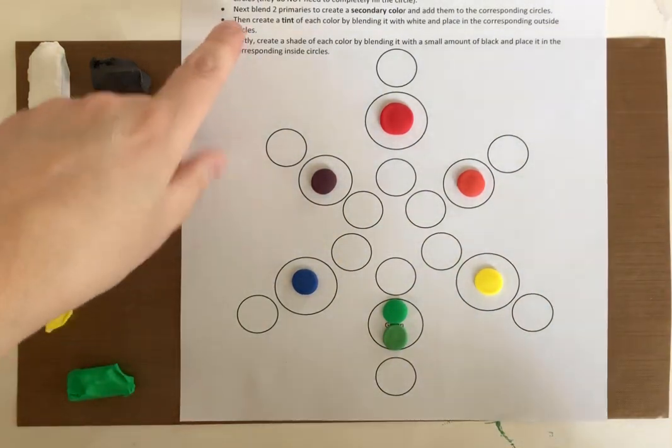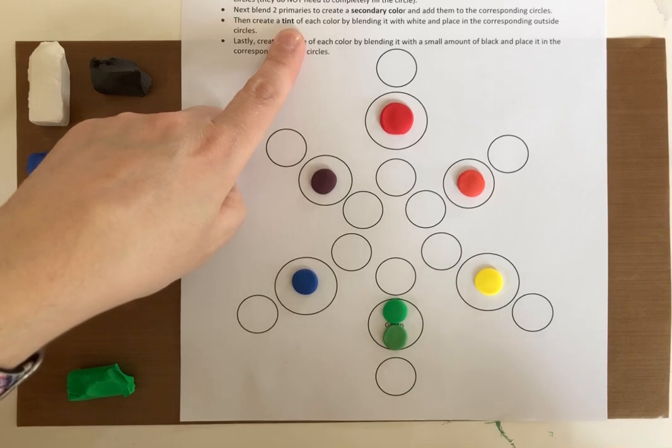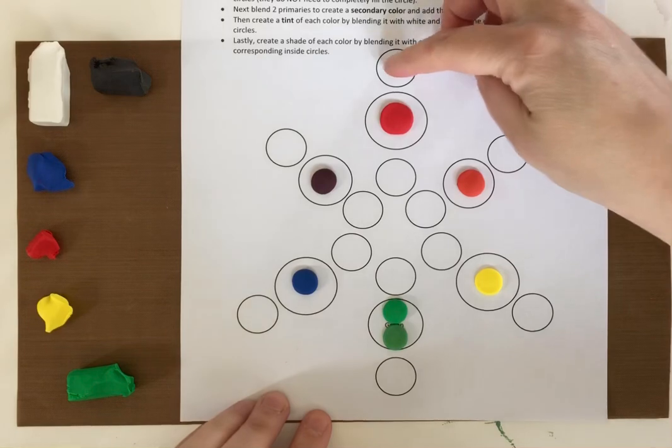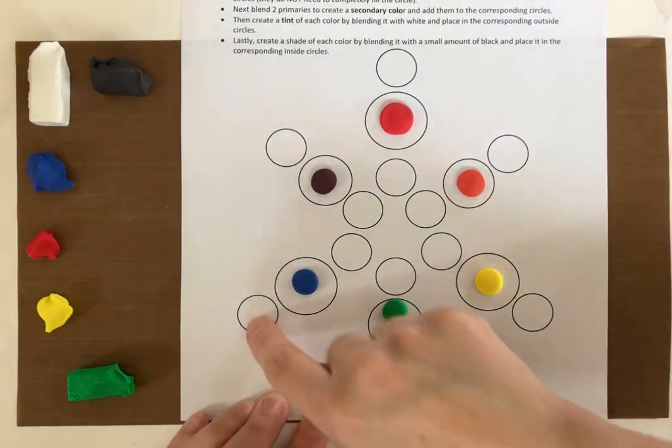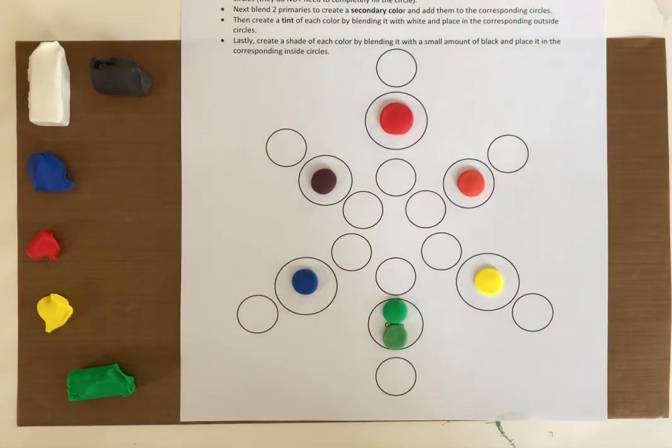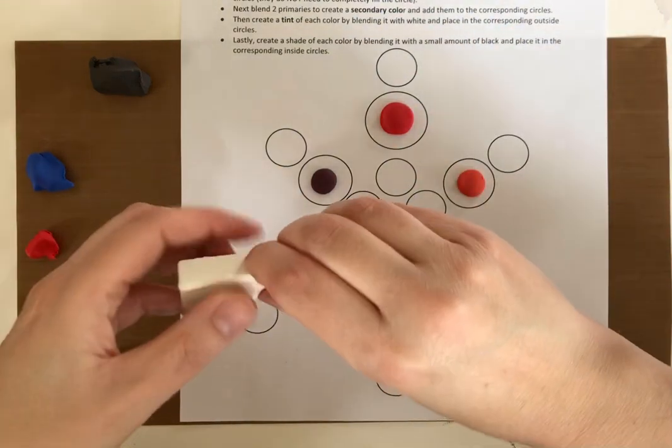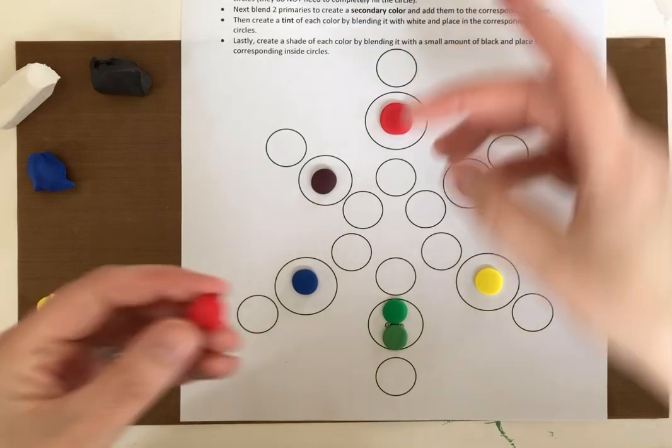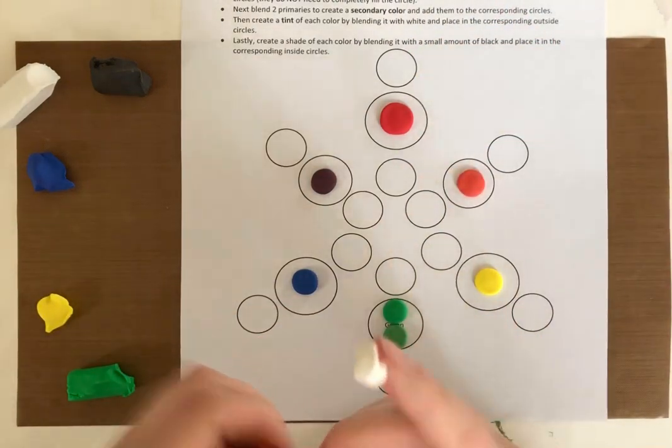The next thing on here is to create a tint of each color by blending it with white and placing it in the corresponding outside circles. So in each one of these we're going to end up with the tint of that color. So to create a tint, all it is is you're going to take that color and some white and mix it together. So the tint of red is pink.